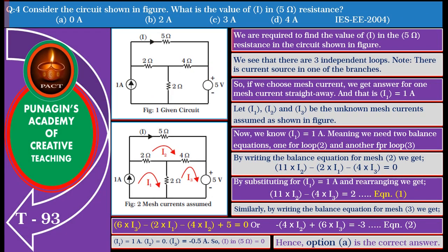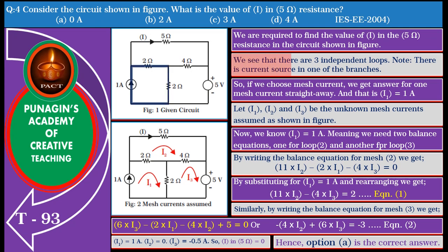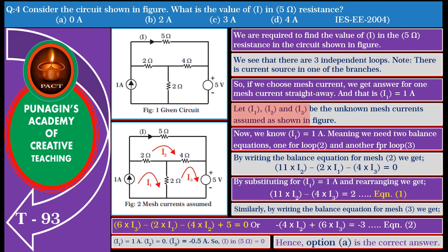Friends, in this problem, we are required to find the value of I in the 5 ohm resistance in the circuit shown in the figure. Observe the given network — we see that there are 3 independent loops. Note, there is an ideal current source in one of the branches. So if we choose the mesh current method, we get the answer for one mesh current straight away — that is I1 equals 1 ampere. So let I1, I2, and I3 be the unknown mesh currents assumed as shown in the figure.